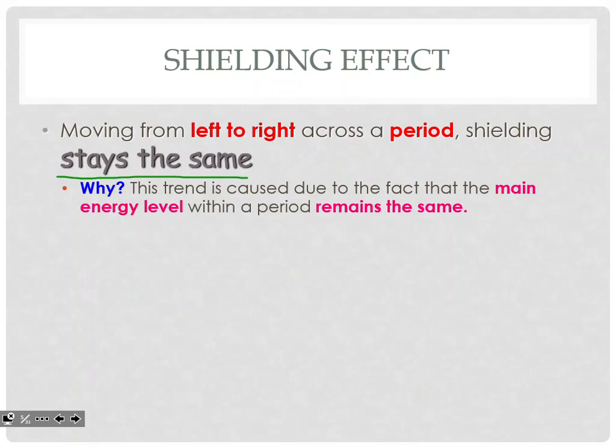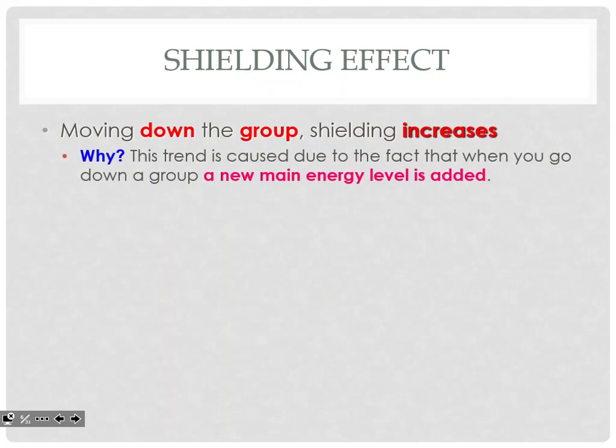Going down the group, the shielding increases. This trend is caused due to the fact that when you go down a group, a new main energy level is added. So you're adding a new main energy level to it, creating more core electrons, creating more shields, and decreasing the pull of the nucleus on the outer electrons. As you go down the group, you're adding more energy levels — more energy levels means more shields, and it lessens the pull of the nucleus. The trend increases because adding new main energy levels creates more core electrons that shield the pull of the nucleus.